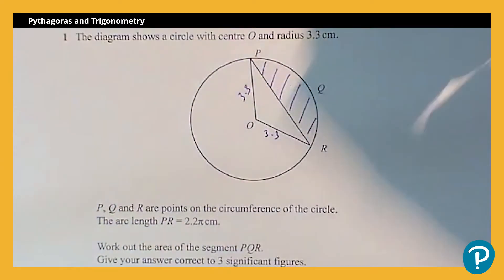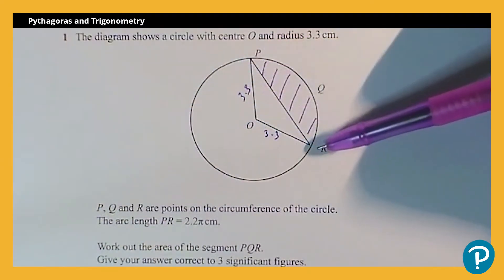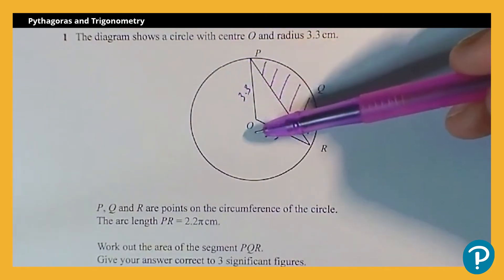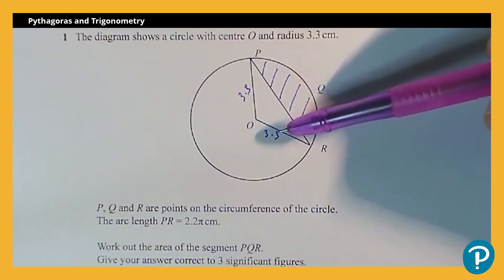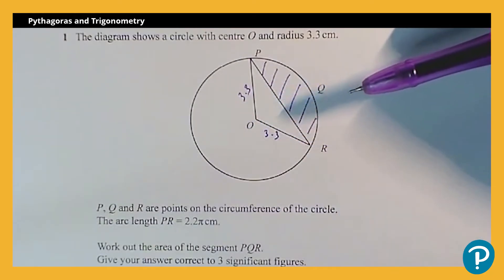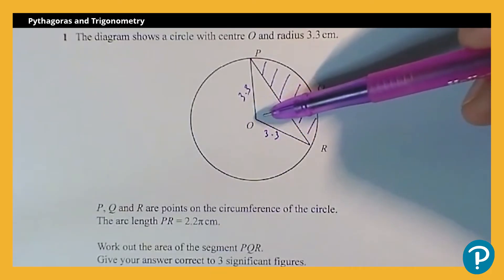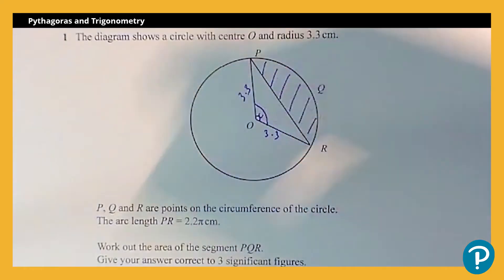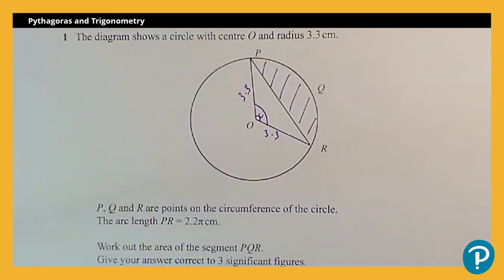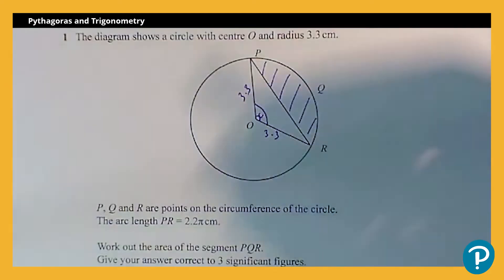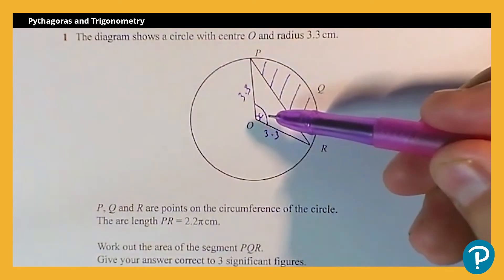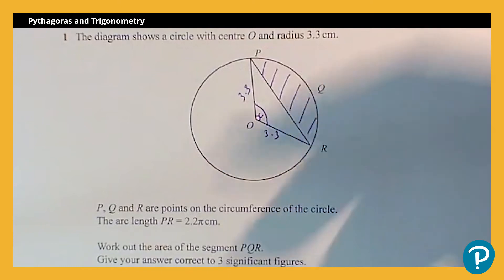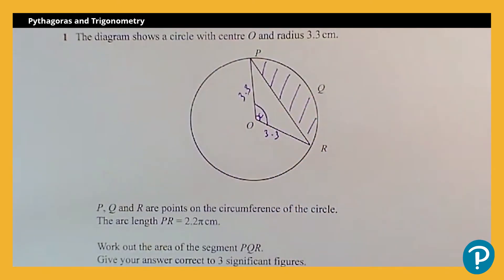The way we're going to do that is we're going to work out the area of the sector OPQR, and we're going to subtract the area of the triangle OPR. At the moment, I can do neither of those things because, although I've got the radius, I don't know what this angle is — the angle POR. That angle there. I'm going to call it X. So we're going to work out that as our first step. Because I know the arc length, I can generate the value of X. Once I know X, I can work out the area of the sector, the area of the triangle, and subtract them to find the area of the segment.